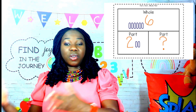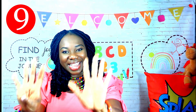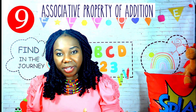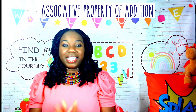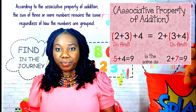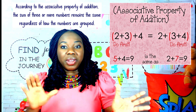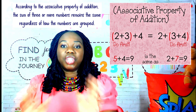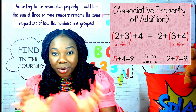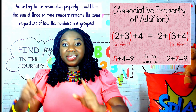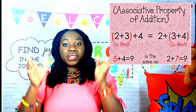Addition strategy number nine: the associative property of addition. This strategy is necessary for our elementary learner to master. In the associative property of addition, learners must understand that changing the grouping of addends does not change the sum. It simply means that the total of three or more numbers remains the same regardless of the way in which these numbers are grouped.